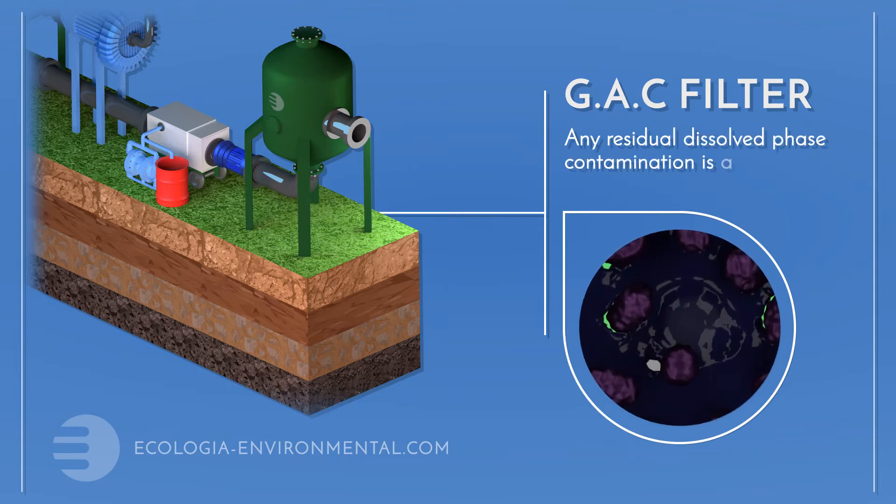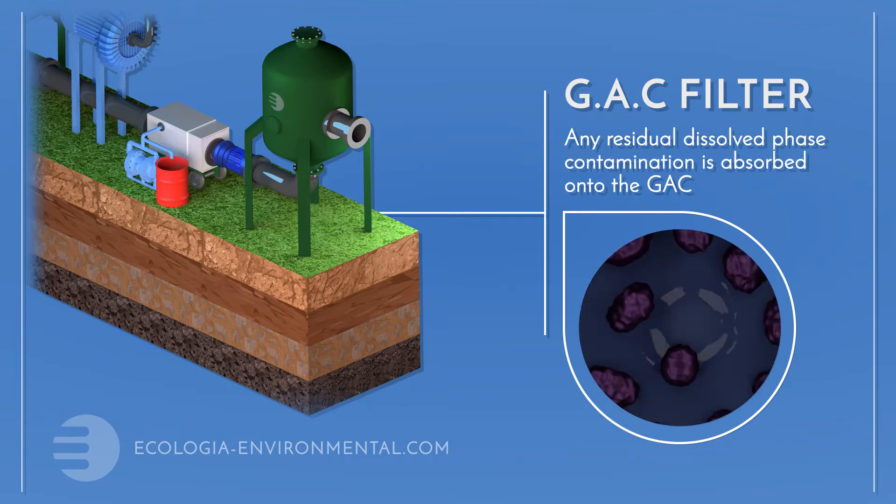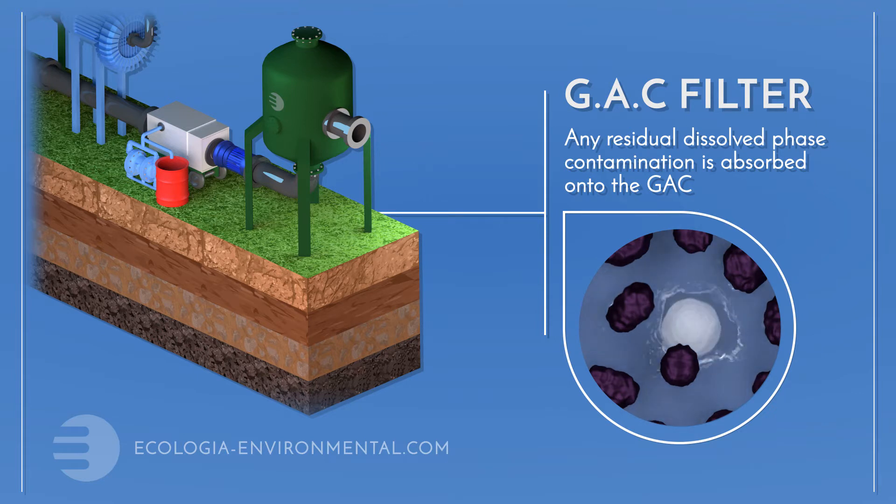The groundwater is finally cleaned using a granular activated carbon filter to remove organic contaminants. Specialized filters can also be used to remove heavy metals and other contaminants.